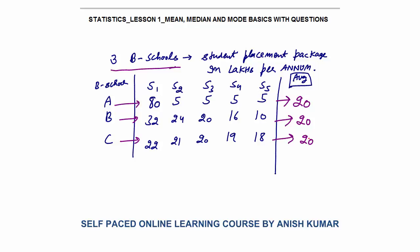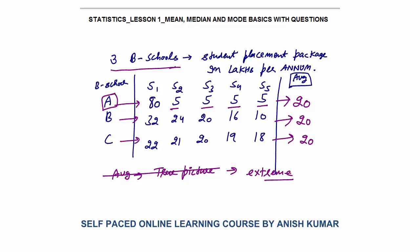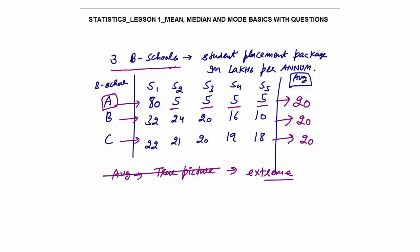Now, it is very important to understand: if you have not seen the placement brochure of any of these schools and you only know that School A's average package is 20 lakhs, you might assume students are getting at least 20 lakhs — but this is not true. In School A, four students are getting only 5 lakhs and one student is getting 80 lakhs. So average does not represent the true picture when there are extreme values — very low or very high. Average only represents the true picture when the data does not include extreme values. In the case of College C, where all five students get almost equal packages, the average of 20 lakhs is a reliable figure.